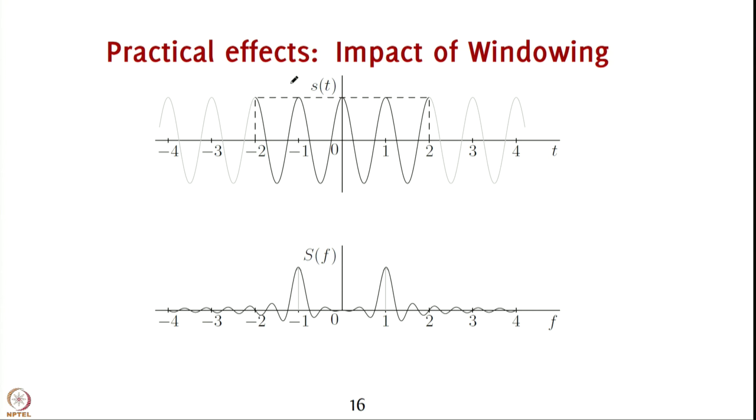To get back some of the characteristic of the cosine Fourier transform, we can make the window slightly larger. If you go from minus 3 to 3, then the sincs become slightly smaller and you have a narrower kind of sinc in the frequency domain. If you go from minus 4 to 4, it becomes even narrower.